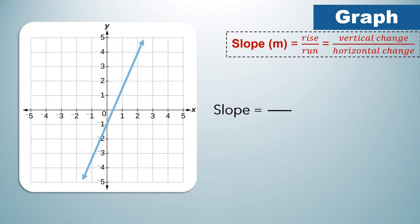Let us proceed with our first example. We are going to use rise over run to identify the slope of this line. Before we do that, let us locate first any two points on this line. We may start counting the vertical change starting from the first point, then count going upward, since we are counting for the rise, until we reach the coordinate of the second point.